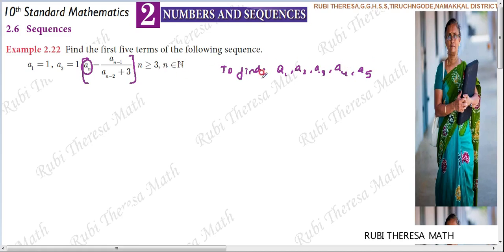For this sequence, a1 equals 1 — the first term is already given. The second term is also given: a2 equals 1. So two terms are already given in the question. a1 equals 1 and a2 equals 1.